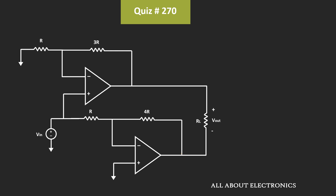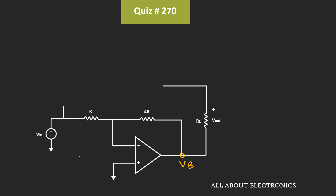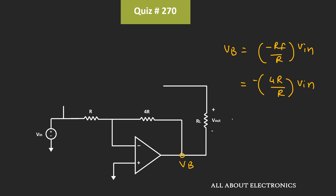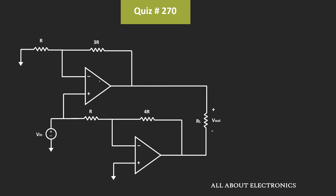Similarly, let's find the voltage Vb at the output of this second op-amp. The input voltage is connected to the inverting terminal, so the output is given as minus (Rf/R) times input voltage. Here Rf is equal to 4R while R is equal to R, so Vb will be equal to minus 4 times input voltage. Thus Va equals 4Vin and Vb equals minus 4Vin.